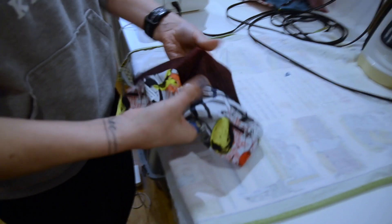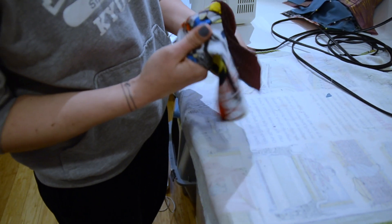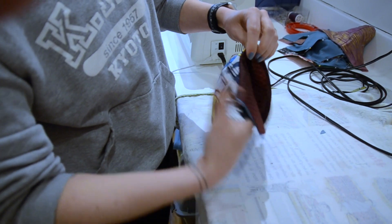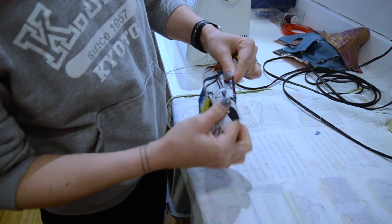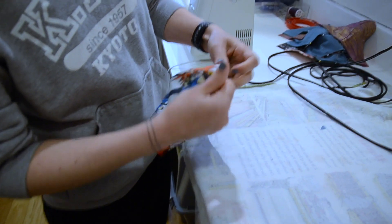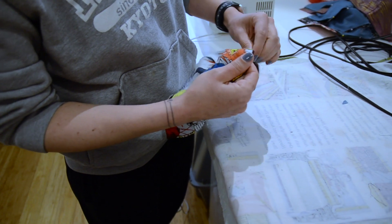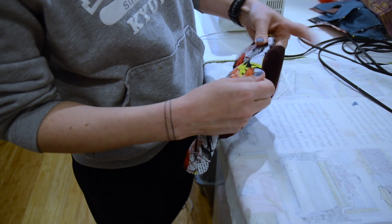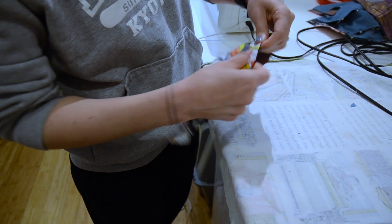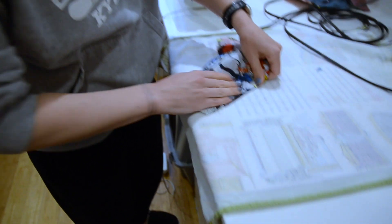Now we're going to open this up so that we have our outside fabrics showing. You're going to start to begin to see how your mask is coming together. I'm going to iron this to keep it all flat.